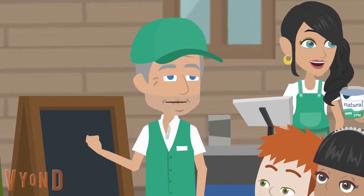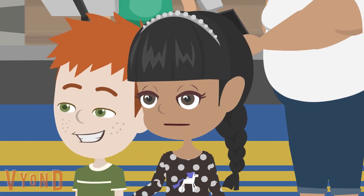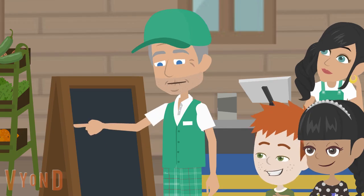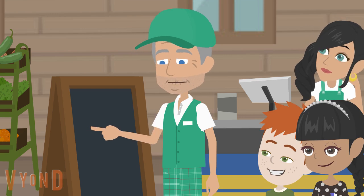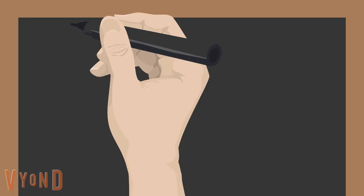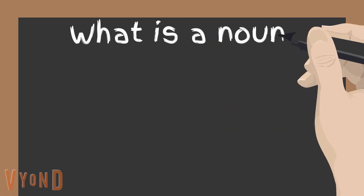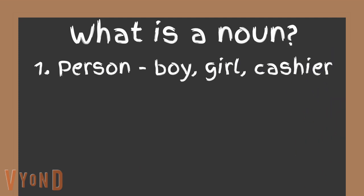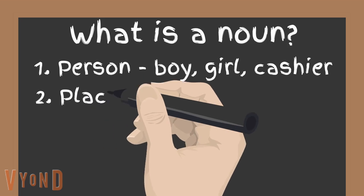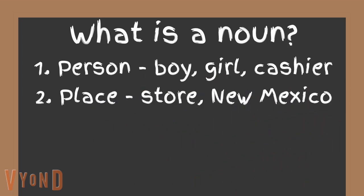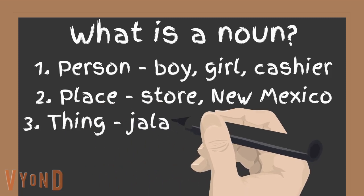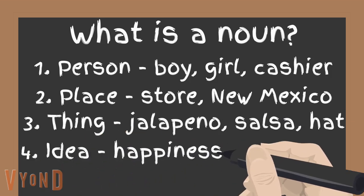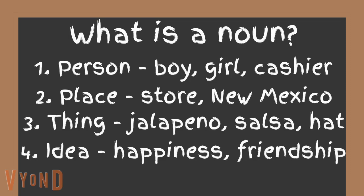And that's why it's capitalized. What other kinds of nouns are there? Well, I'm glad you asked, little Jessica. Here, let me write this down for you on the sandwich board. A noun names a person like boy, girl, or cashier — like Monique here. A noun names a place like store or New Mexico. It names things like jalapeño, salsa, and hat. Finally, it names ideas like happiness and friendship.